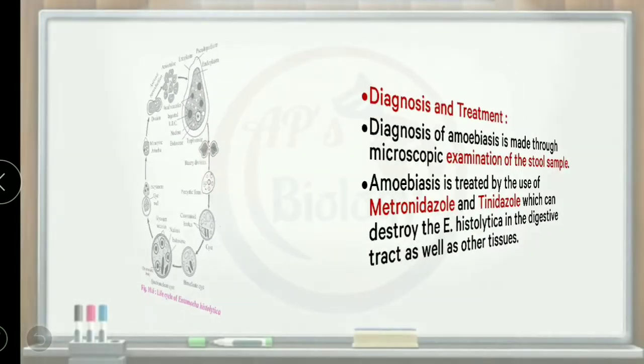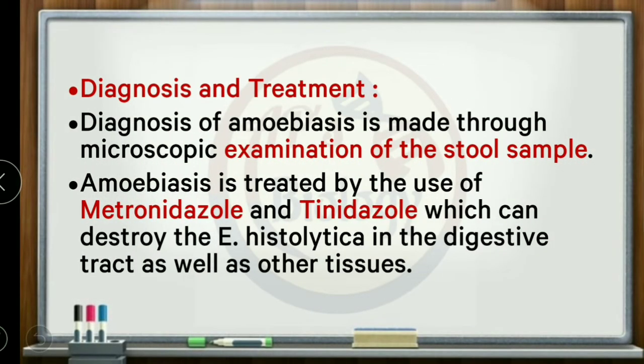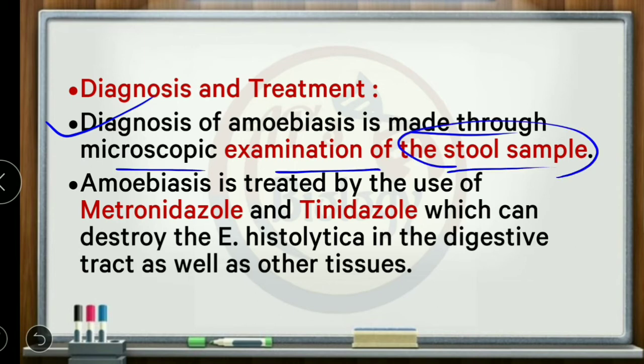Diagnosis of amoebiasis is made through microscopic examination of stool. The stool sample — fecal matter — is examined under microscopy, similar to other fecal examination procedures.